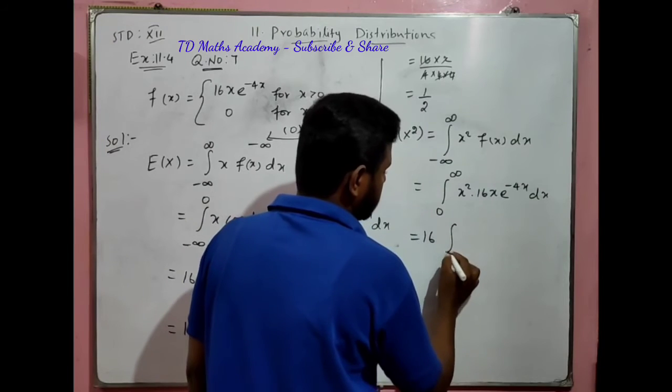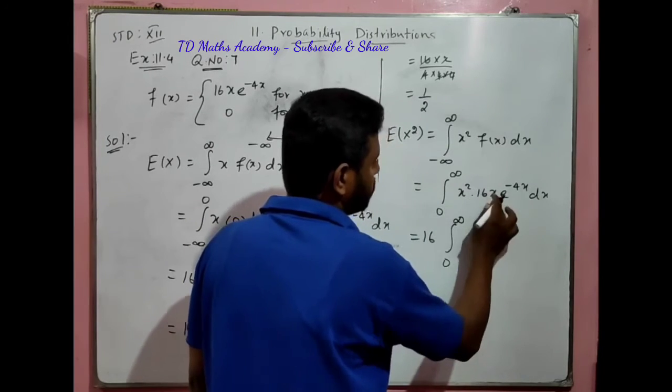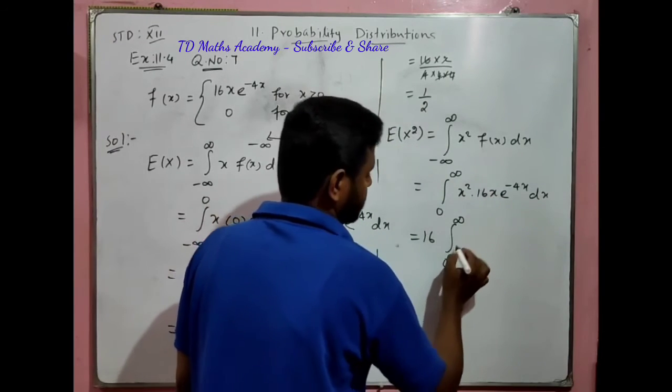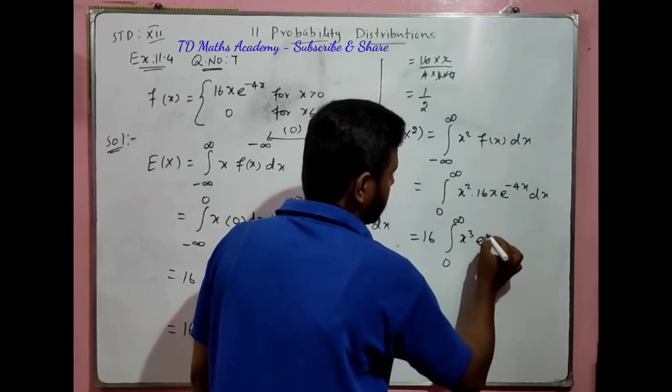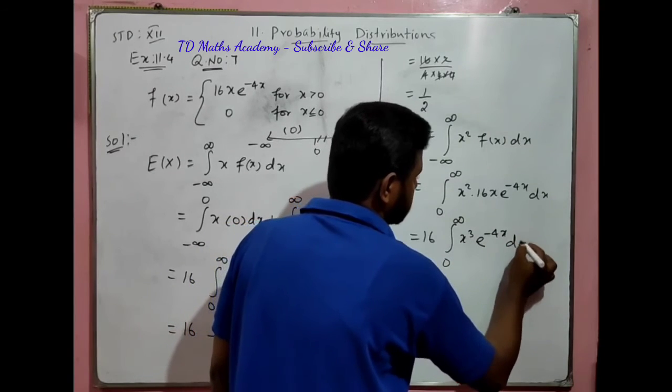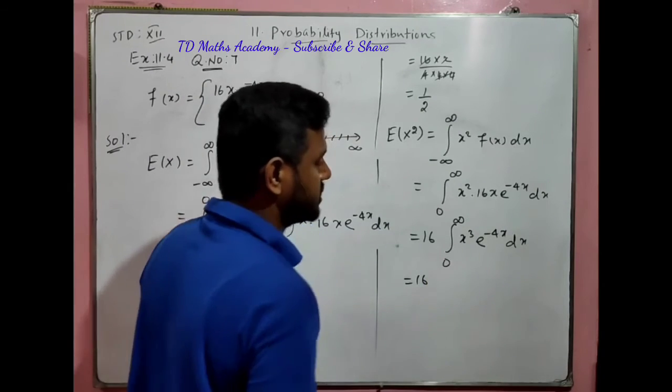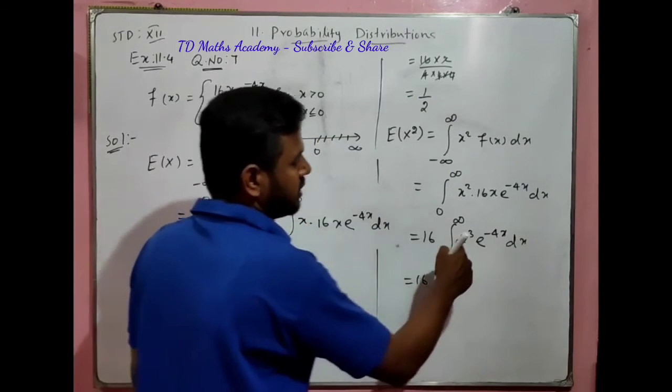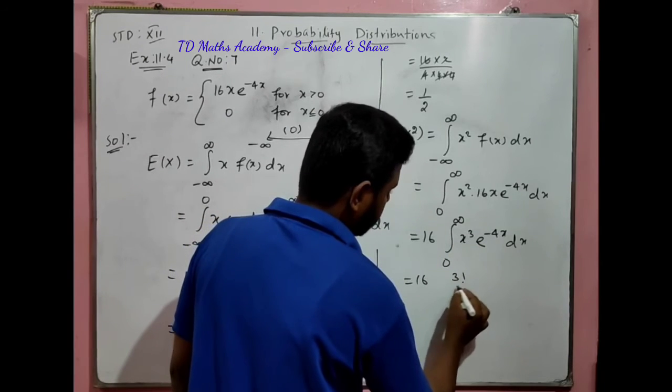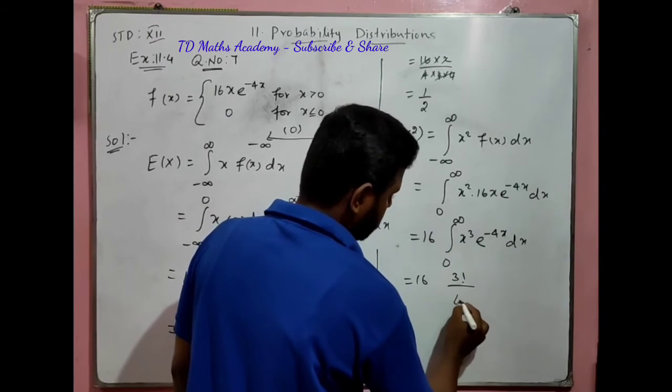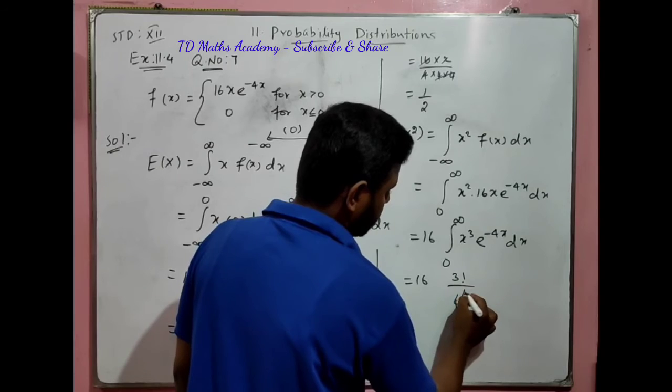16 constant, integration 0 to infinity of x³ e^(-4x) dx. Using the gamma formula: 3 factorial divided by 4^4.